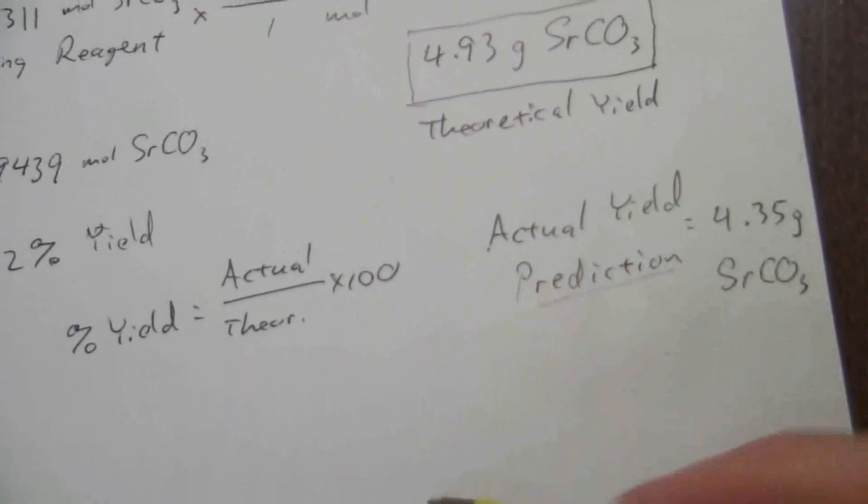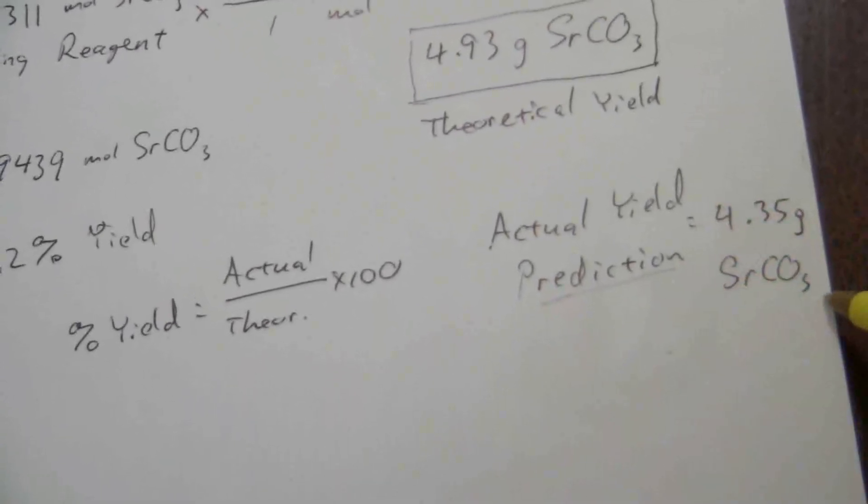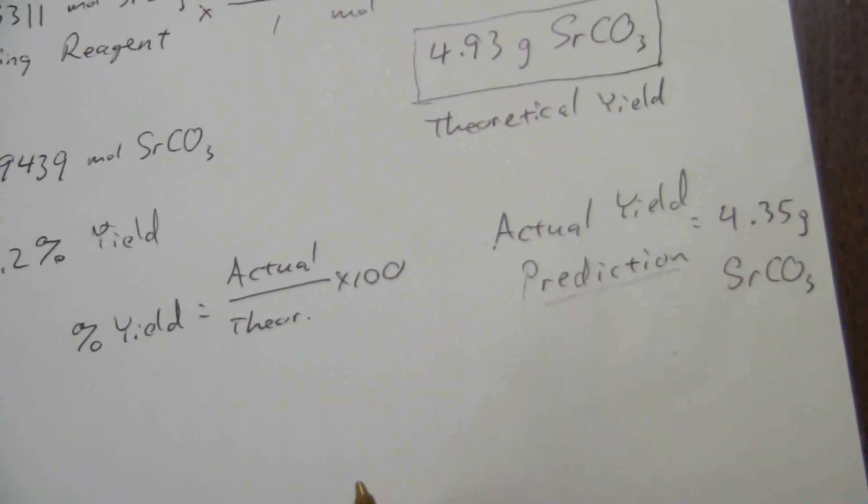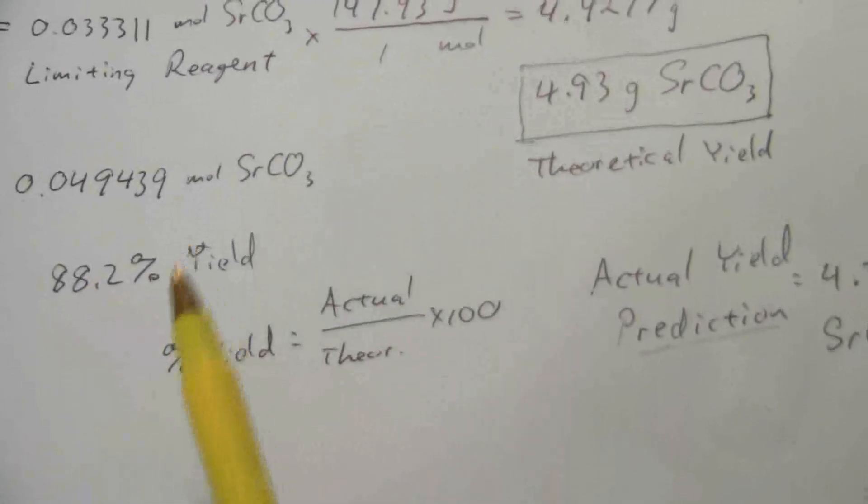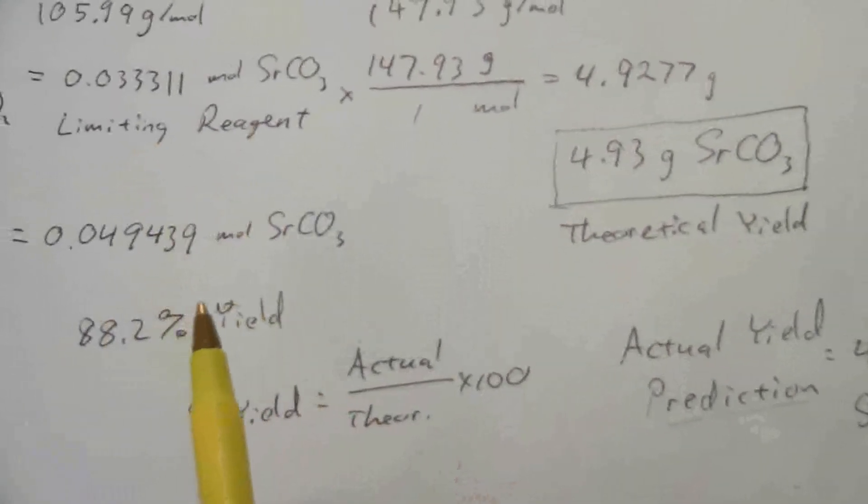it's a prediction of how much we would be able to collect. That 4.35 is what we would predict we could collect, knowing that it goes by an 88.2% yield when we do that reaction.